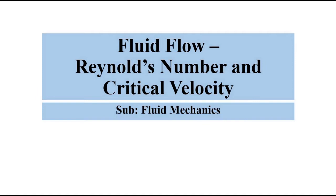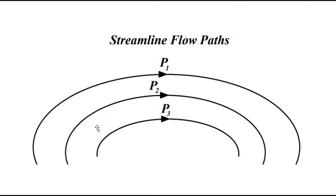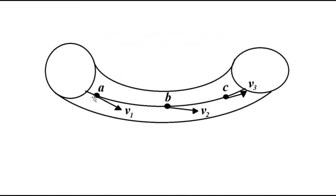Just a quick recap: liquid flow can be divided into two categories — streamline and turbulent. Streamline flow is well defined; the path is organized and fixed. Velocity at each point is given by drawing a tangent to the curved path. The velocity is not constant throughout, but at each point in that well-defined curved path, it is fixed.